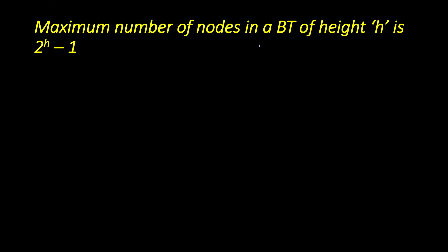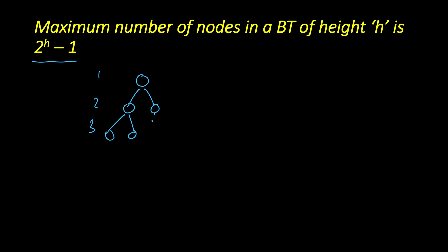The next property is that the maximum number of nodes in a binary tree of height H is 2 raised to the power H minus 1. Again, we want the maximum number of nodes, which occurs when every level is completely filled. Consider a tree of height 3 — we can add more nodes without increasing the height, so maximum nodes occurs when every node has 2 children. If we add any more nodes beyond that, the height of the tree will increase.